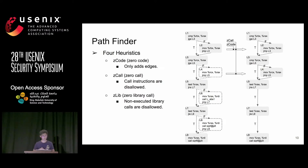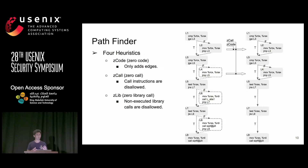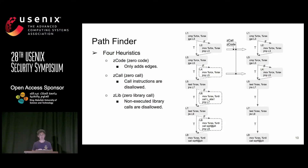The third heuristic is 'no library call' — on the inferred code path, we allow call instructions, but if it calls non-executed library functions, we do not allow that. For example, for code in L6 that has a call instruction calling LABS1, but this function is not a library function, after applying this heuristic we would include the code in L6.